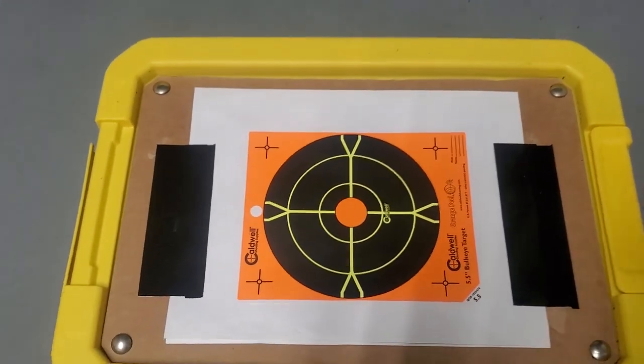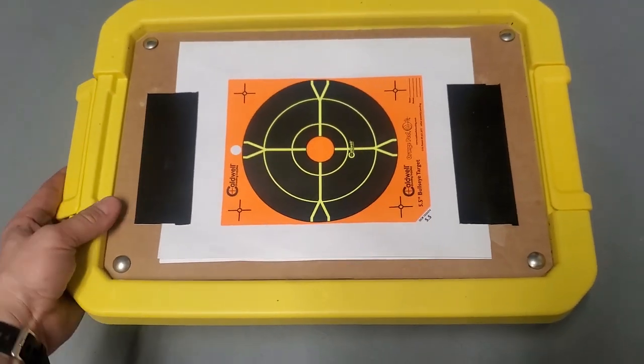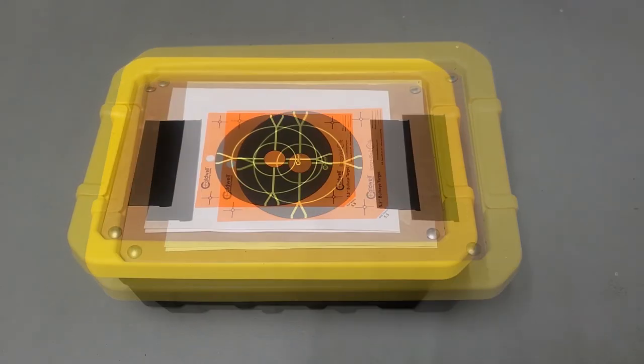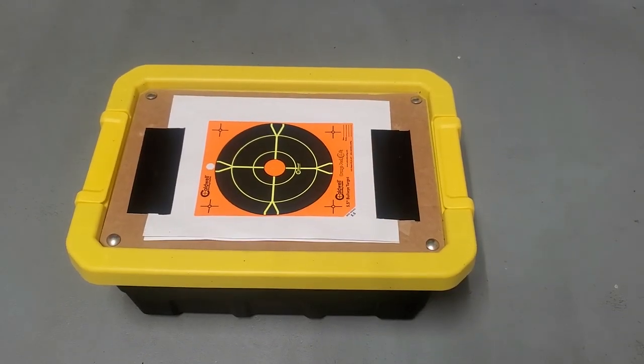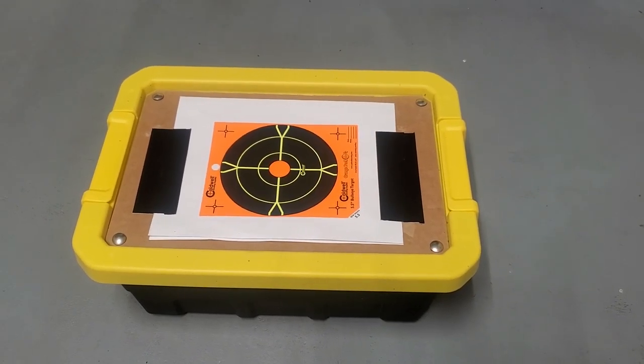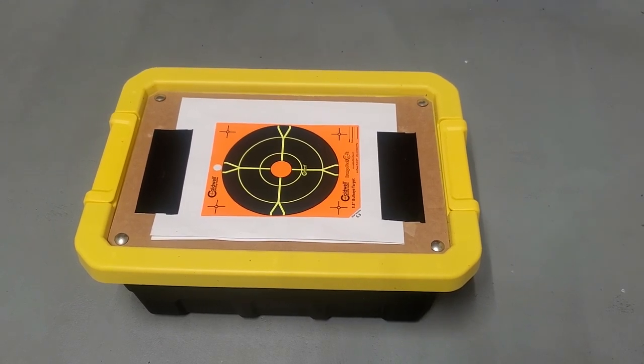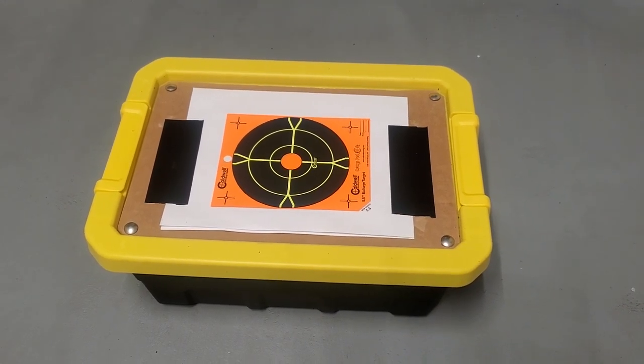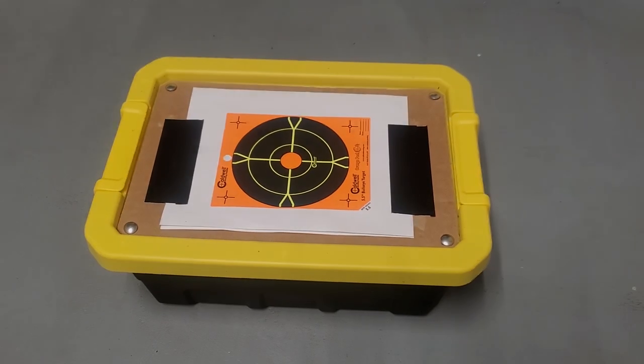So anyway, that is the handy dandy storage bin and BB trap. If you'd like to buy any of this stuff and try it yourself, I have links to the bin and the carpet tiles down in the video description. But other than that, if you have any questions, hit me up in the comments. Thanks for watching and take care.